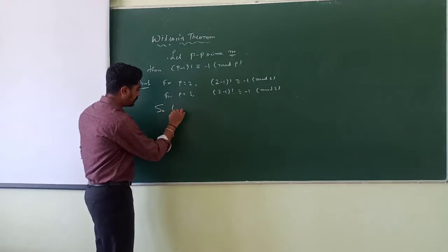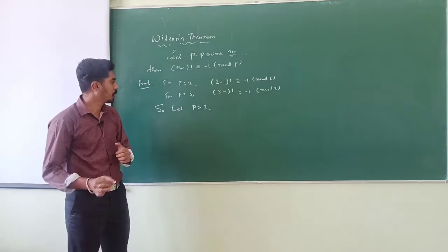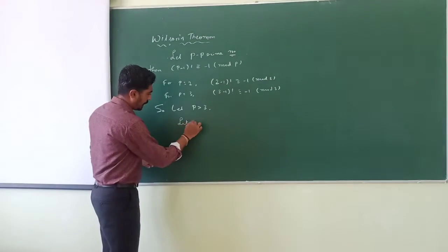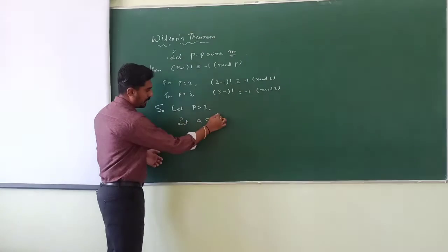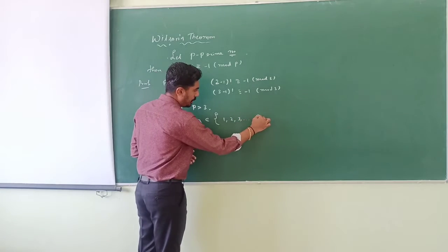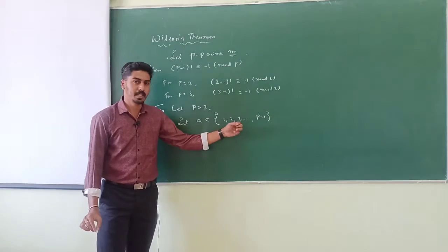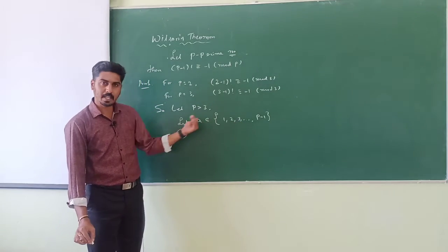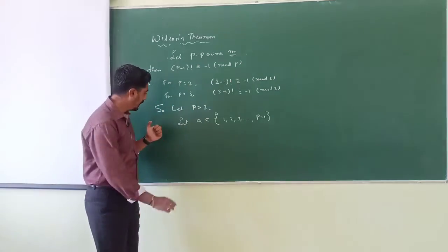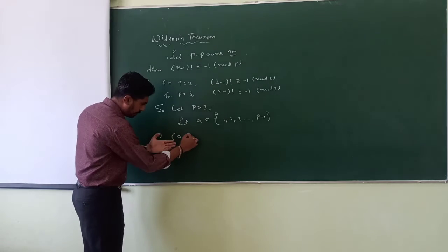Now let p be greater than 3. Let a be an integer in the set {1, 2, 3, ..., p minus 1}. Every integer in this set is less than p and hence relatively prime to p, since p is a prime number. This implies that GCD of a and p is 1.